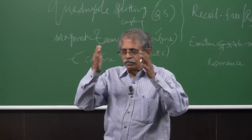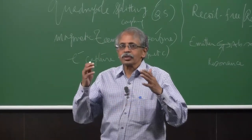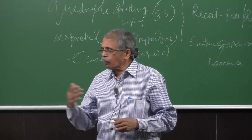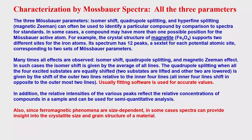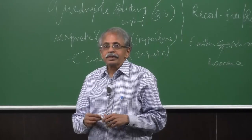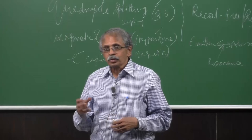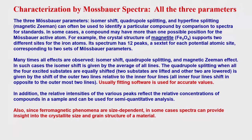By looking at the areas of all these peaks, you can identify two centers — suppose there are two types in Fe3O4 — and get the ratio of how much of one versus the other. Since ferromagnetic phenomena are size-dependent, you can also use the spectra to study the crystallite size and grain structure of the material, making it a good application for nanomaterials.